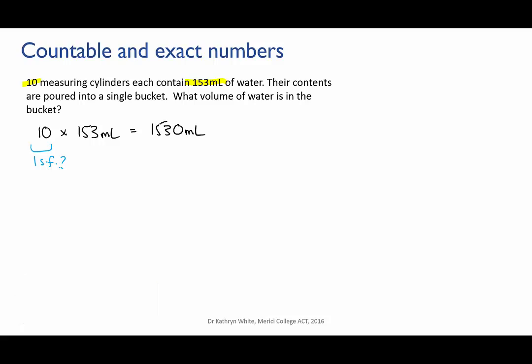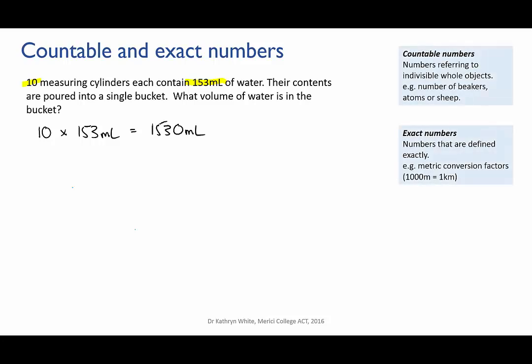The 10 refers to the number of measuring cylinders. Is there any doubt about how many measuring cylinders there are? Do you think if you measured more carefully you might find that there was actually 10.1 measuring cylinders? No, of course not. The 10 figure here is what's known as a countable or an exact number.